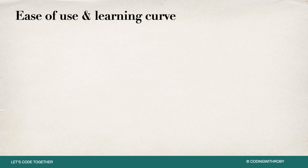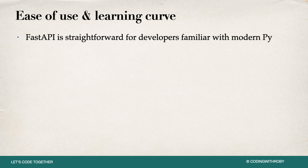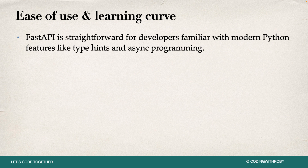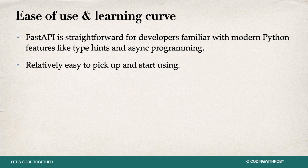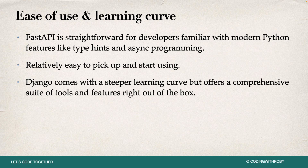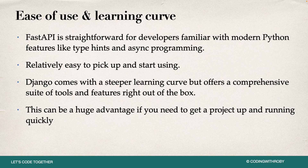Now let's check out the ease of use and learning curve. FastAPI is straightforward for developers familiar with modern Python features like type hints and asynchronous programming — it's relatively easy to pick up and start using. Django, on the other hand, comes with a steeper learning curve, but offers a comprehensive suite of tools and features right out of the box. Depending on what you need, if you want a bunch of features ready immediately, that can be a huge advantage if you need to get a project up and running quickly.